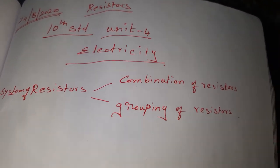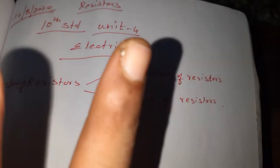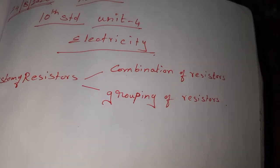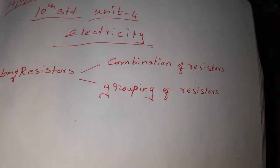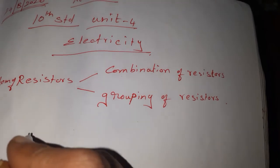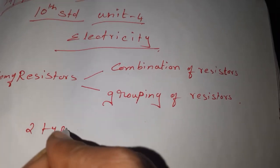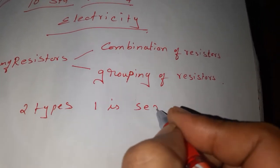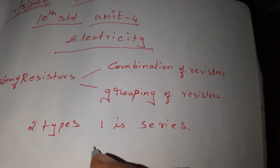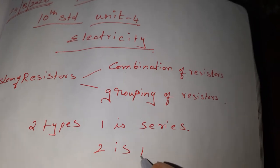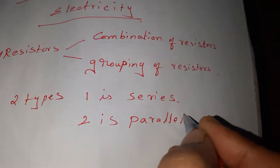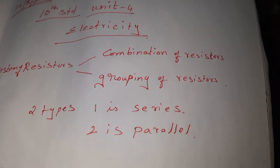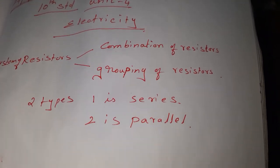Here we are going to see two types: one is series connection and another one is parallel connection. Resistors connected in series and parallel — these are the two types of connection we are going to see. Grouping of resistors is of two types: one is series connection and another one is parallel connection.